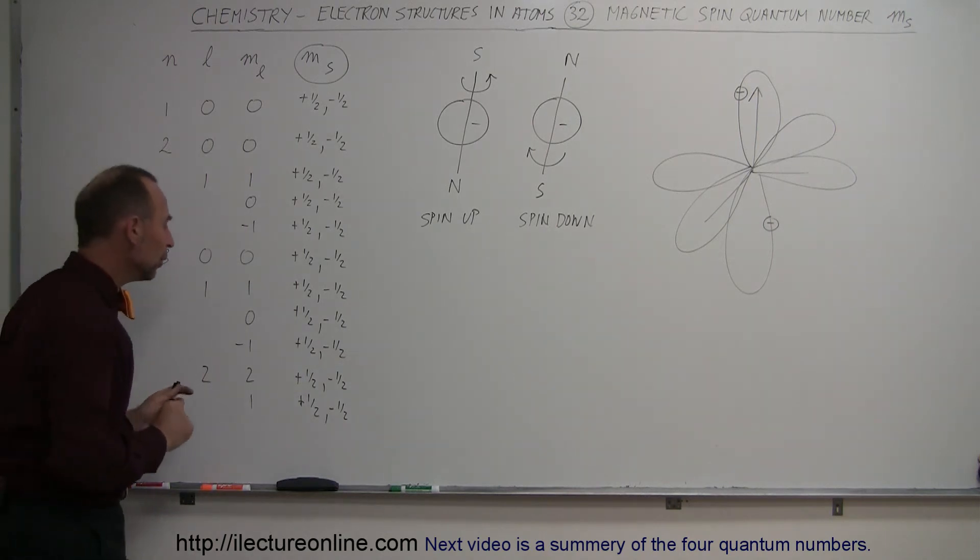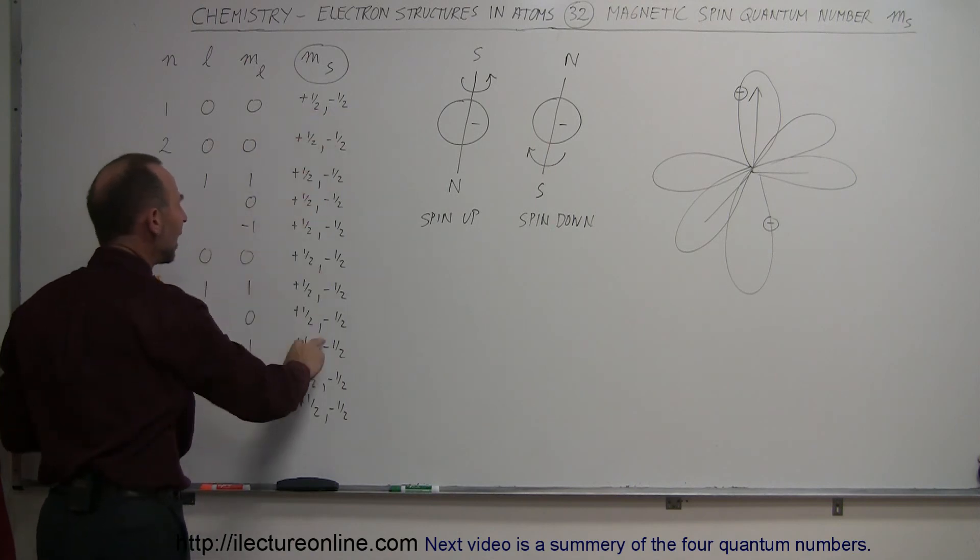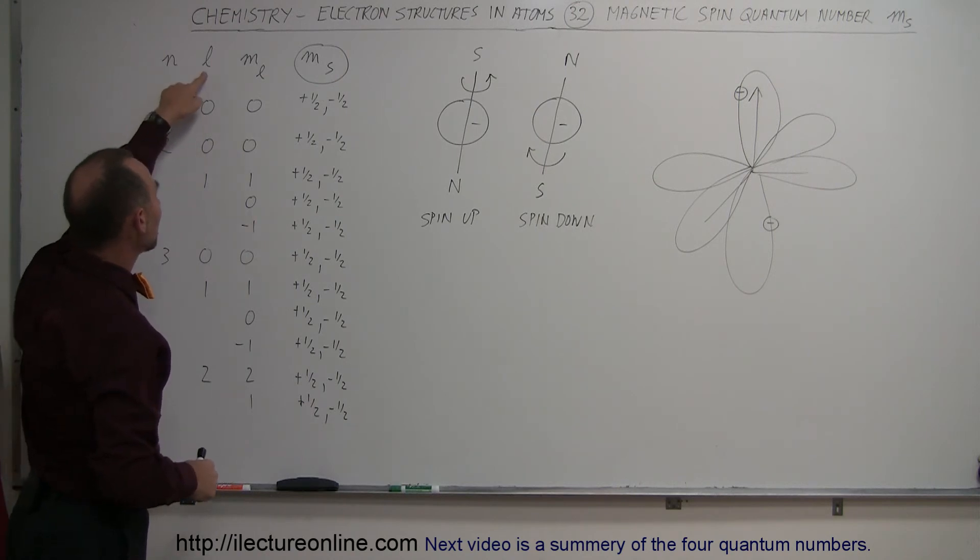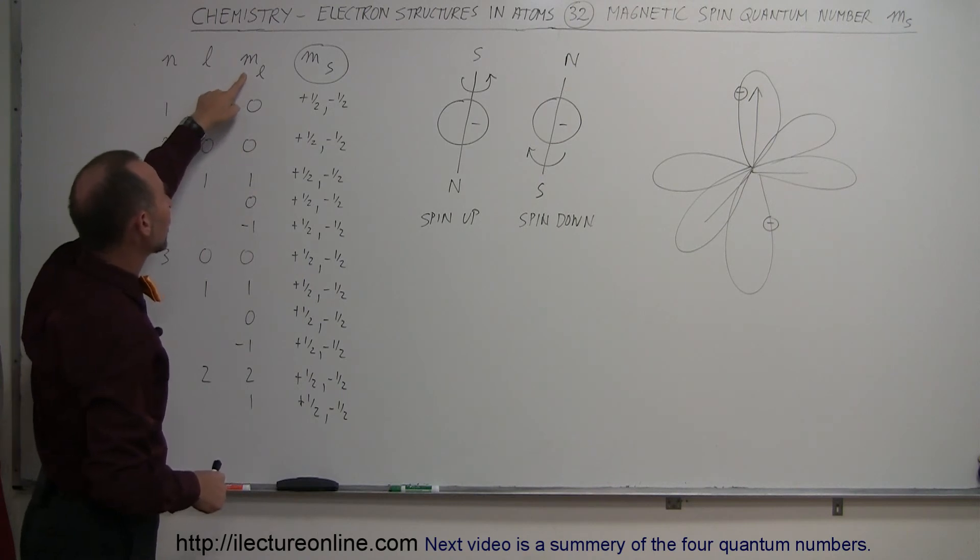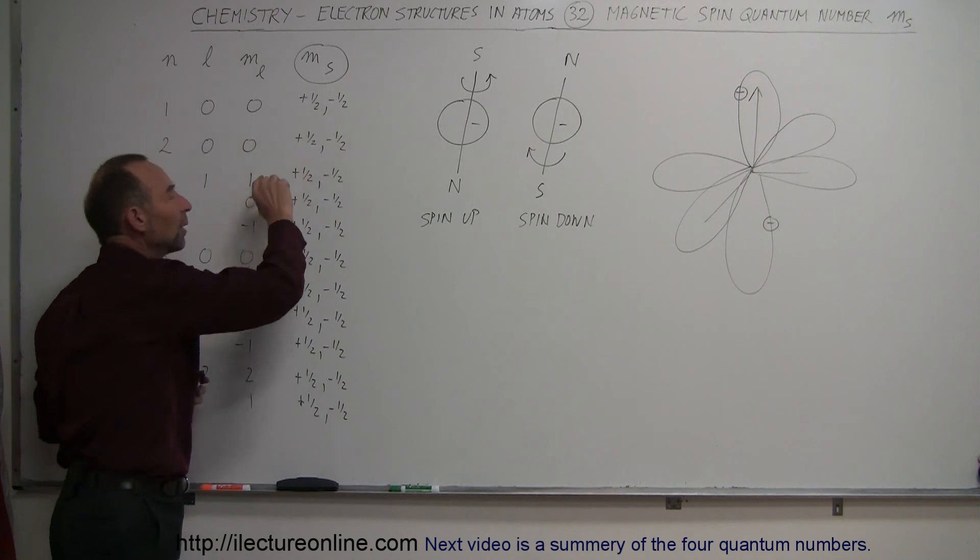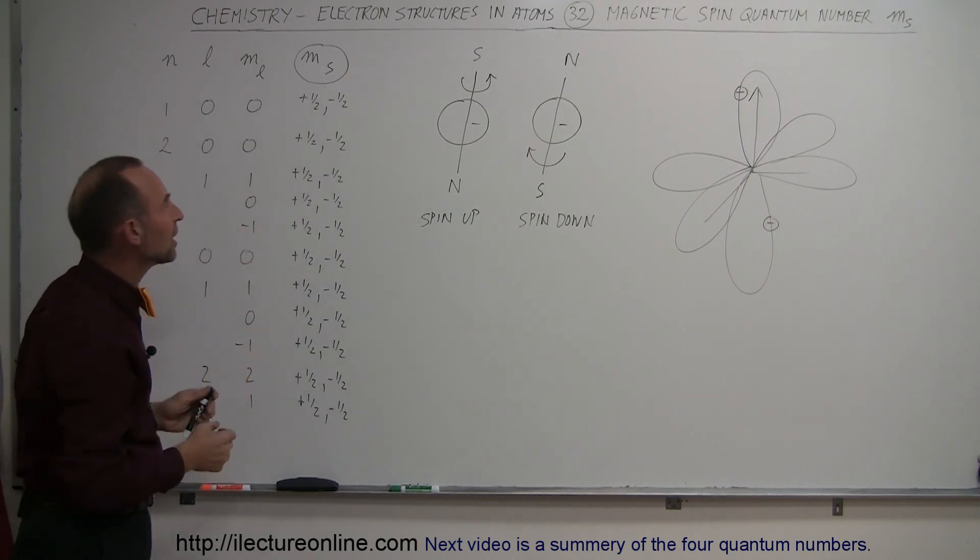One more thing. Notice the plus and minus one-half all the way down the column here. If we go to the first energy level, we know that the angular momentum quantum number can only have a value of zero, and the magnetic quantum number can only have a value of zero. We assign a value of plus and minus one-half to the spin directions of the electron.